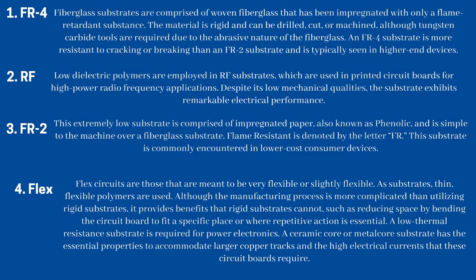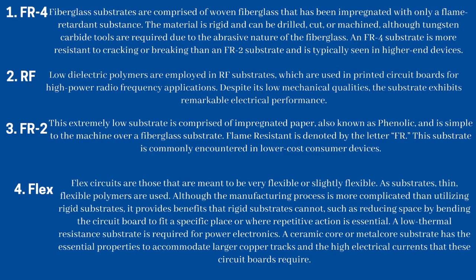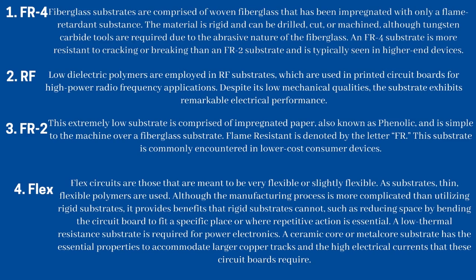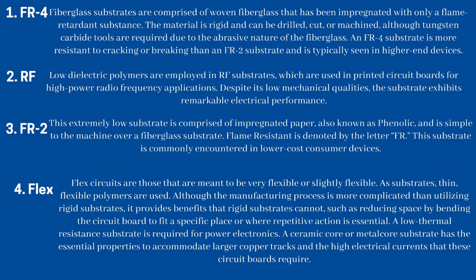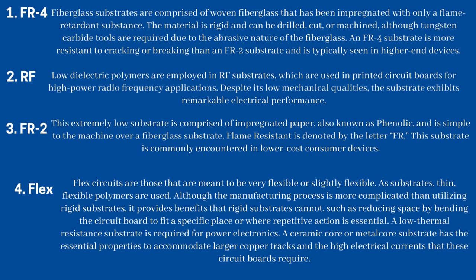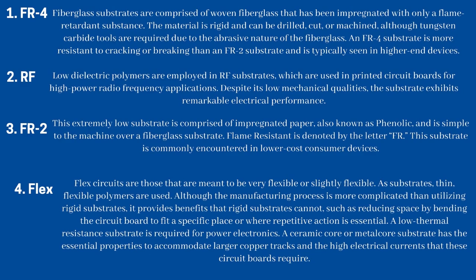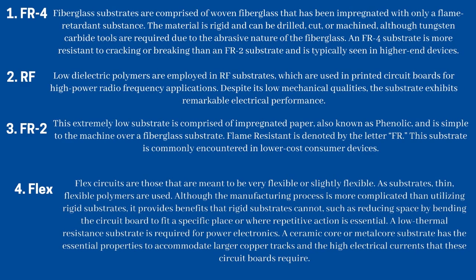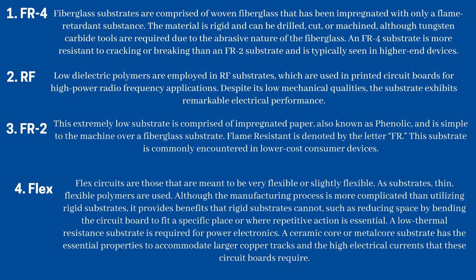FR-4 fiberglass substrates are comprised of woven fiberglass impregnated with a flame-retardant substance. The material is rigid and can be drilled, cut, or machined, although tungsten carbide tools are required due to the abrasive nature of the fiberglass. An FR-4 substrate is more resistant to cracking or breaking than an FR-2 substrate and is typically seen in higher-end devices. RF substrates employ low-dielectric polymers and are used in printed circuit boards for high-power radio frequency applications. Despite its low mechanical qualities, the RF substrate exhibits remarkable electrical performance.